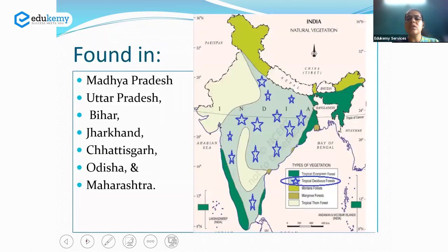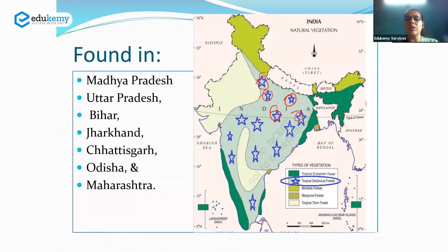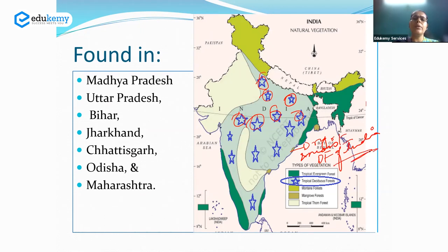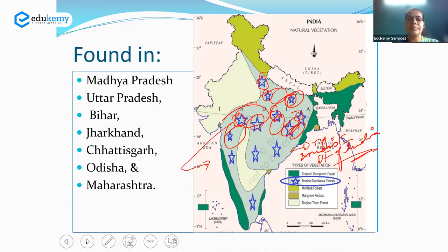The distribution of dry and moist deciduous forests includes states such as Madhya Pradesh, Uttar Pradesh, Bihar, Jharkhand, Chhattisgarh, Odisha, and Maharashtra. These are the areas constituting the deciduous forests of India.